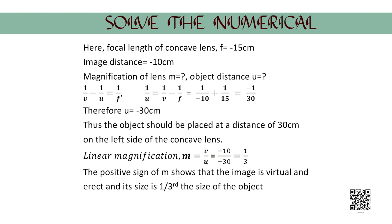Since concave lenses always form a virtual image on the same side as the object, the image distance is always negative. Therefore, image distance v equals minus 10 cm. We are required to find the magnification and object distance. Using the lens formula 1/v minus 1/u equals 1/f, and rearranging as 1/u equals 1/v minus 1/f, substituting the values of v and f, we get 1/(minus 10) plus 1/15 equals minus 1/30. Therefore, the object distance turns out to be minus 30 cm.